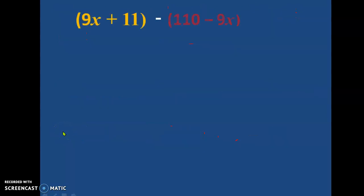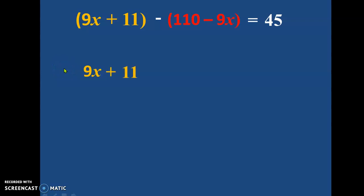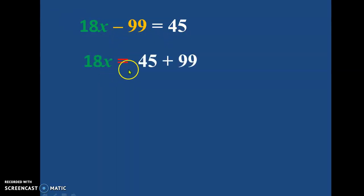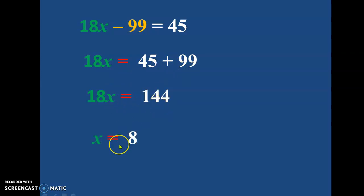So let us write the variable form: (9X plus 11) minus (110 minus 9X) equals 45. Opening the brackets, we get 9X plus 11 minus 110 plus 9X equals 45. Simplifying, 18X minus 99 equals 45, so 18X equals 144, giving us X equals 8.